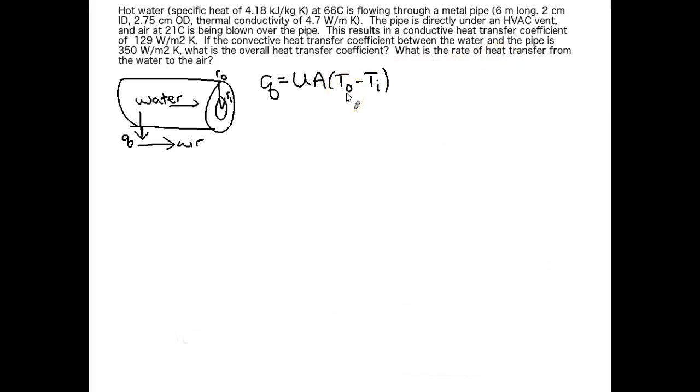So by putting the smaller temperature here, TO, our air temperature, minus our larger temperature TI, the temperature of the water, that's going to give us a negative Q. That's why I wrote the temperatures in that particular order. The order of the temperatures depends on the direction of heat transfer. It's whatever is going to give you the right sign on your heat transfer. So you have to think carefully about your system when you do this.